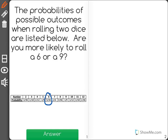The probability of rolling a 6 is 5/36, and the probability of rolling a 9 is 1/9.